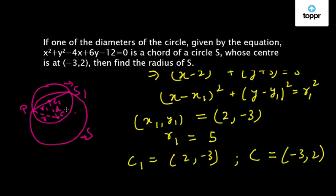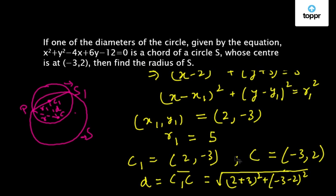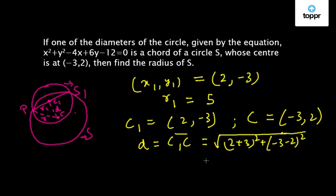So now let us find out this distance D. So this distance D will be equal to C1C, that is the distance between C1 and C, and it will be equal to √[(2 + 3)² + (-3 - 2)²]. So this is equal to 5√2.